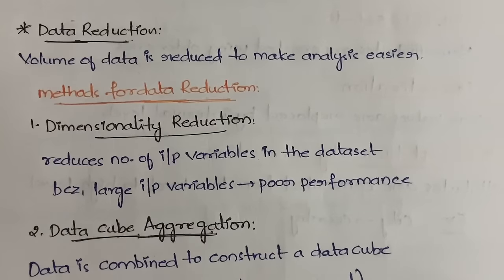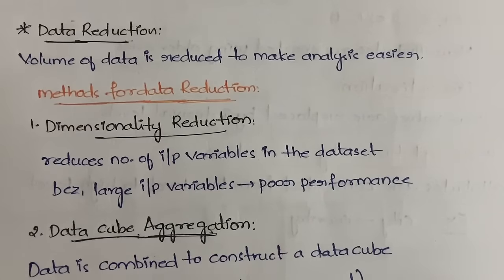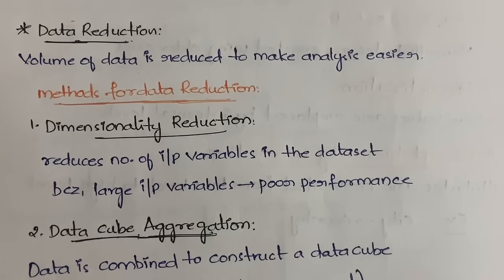Next is data reduction. When you have a very large amount of data, analysis becomes hard and performance decreases. Data reduction reduces the volume of data to make analysis easier. It can be done in two ways: lossy, where some data is lost during reduction; and lossless, where no data is lost but the data is compressed — similar to using a PDF compressor.